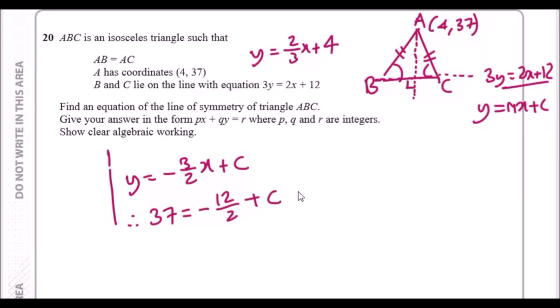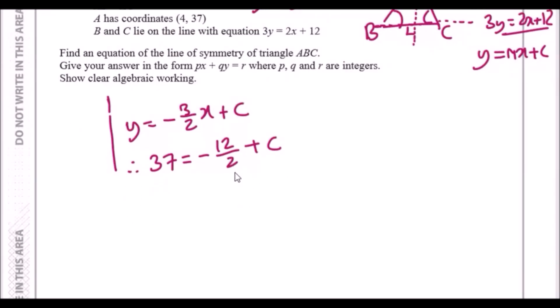Minus 12 over 2 is minus 6, so 37 = -6 + c. To find c, we add 6 across, which gives us 43. That's our value for c.